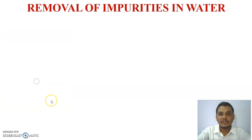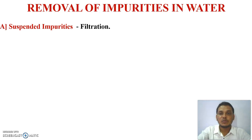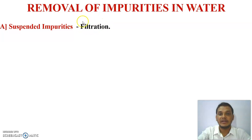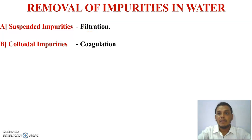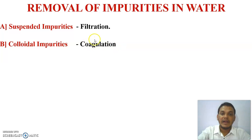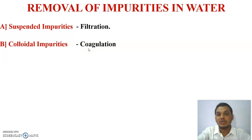Now, how do we remove these impurities? Suspended impurities like clay, mud, and organic or inorganic waste can be easily removed using filtration techniques. Colloidal impurities cannot be removed by filtration; they are removed by the coagulation method followed by the sedimentation process. A commonly used coagulating agent is sodium aluminate or potassium alum.